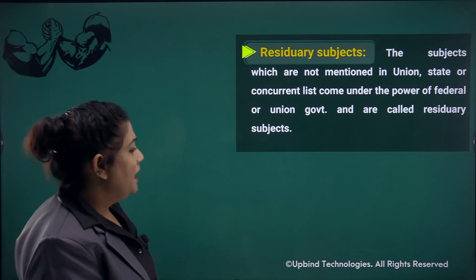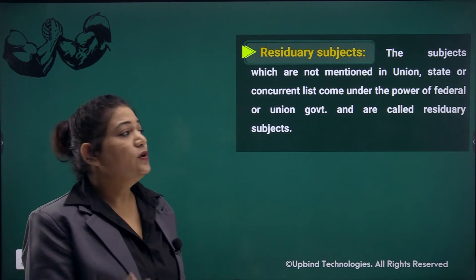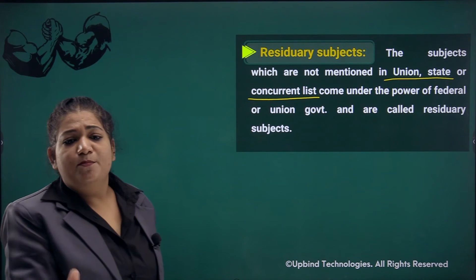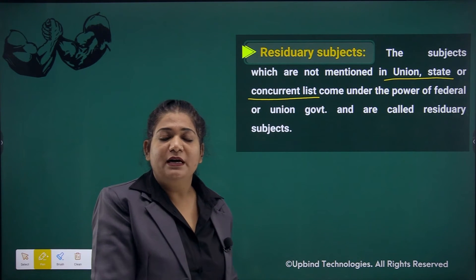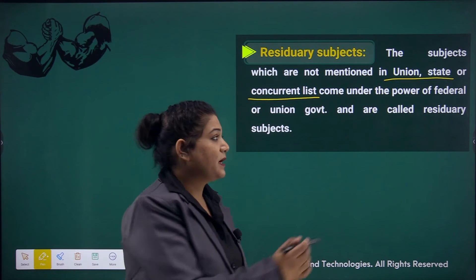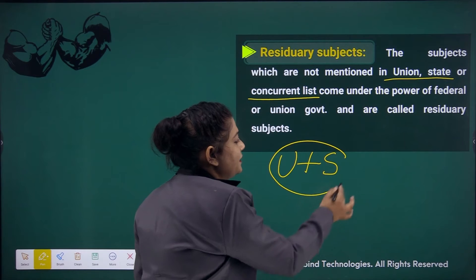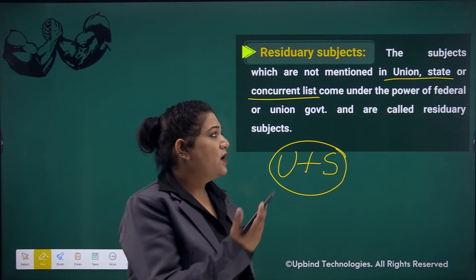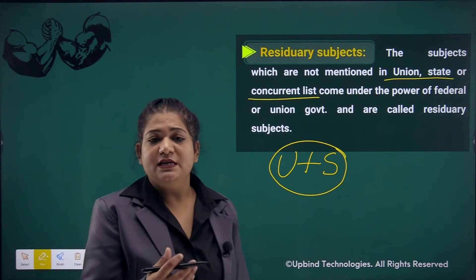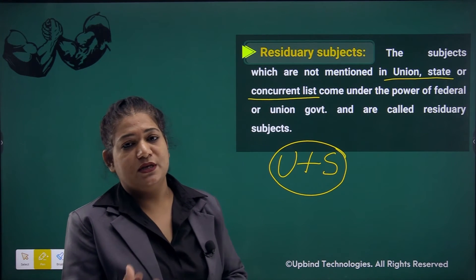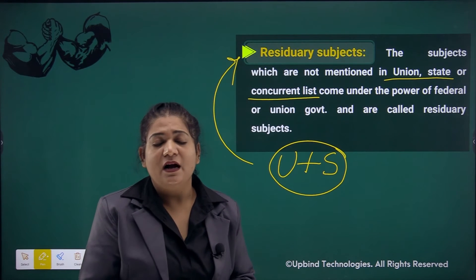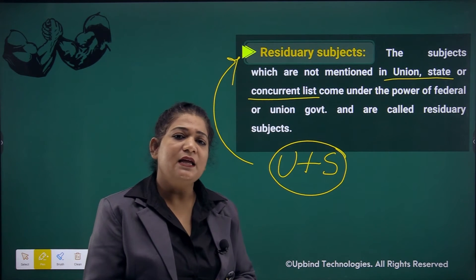Residuary subjects are those which are not included in the union, state, or concurrent lists, but are part of the federal government. There is a special role of Rajya Sabha — Rajya Sabha has powers to declare national importance and make laws related to residuary subjects. If a subject is of national or local importance, Rajya Sabha will consider it. This is the list system of the federal system.